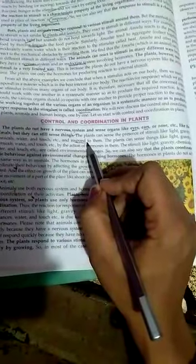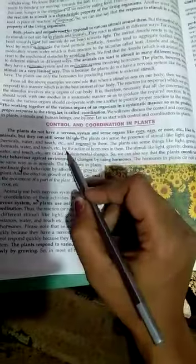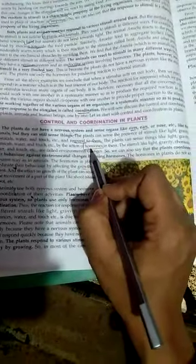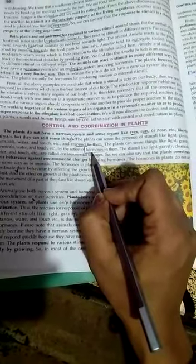Plants can sense things like gravity, chemicals, and water by the action of hormones only. Hormones are secretions.